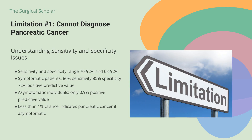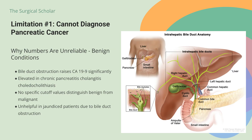Your doctor won't use CA-19-9 alone to diagnose cancer. The sensitivity and specificity for pancreatic cancer range from 70–92% and 68–92% respectively. Even among symptomatic individuals experiencing epigastric pain, weight loss, or jaundice, the sensitivity, specificity, and positive predictive value of an elevated CA-19-9 above 37 units per milliliter are only approximately 80–85% and 72%.